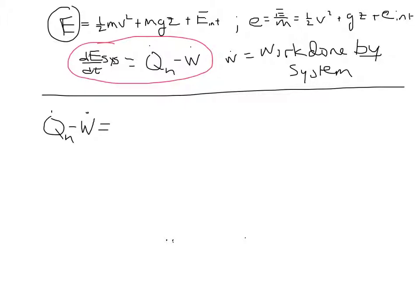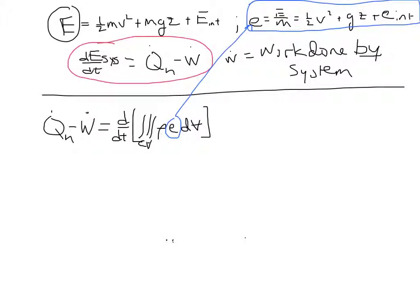This is equal to the time rate of change of the energy of our control volume, which I'm going to write in the form of a triple integral of rho times little e, dv, where little e is the e given in the upper right here and consists of these three separate terms.